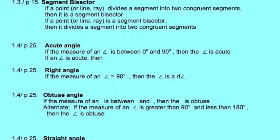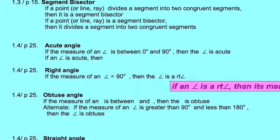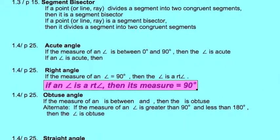I also left some gaps in your sheets. For example, on right angle: if the measure of an angle is 90 degrees, then the angle is a right angle. I want you to write the converse whenever it's not available.